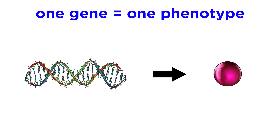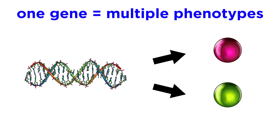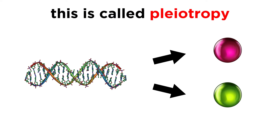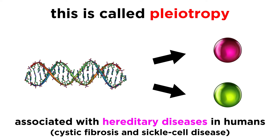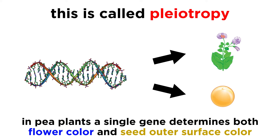Now let's step things up a notch. Until now, even in situations with multiple alleles, we have only seen cases where a particular gene influences only one phenotypic character. Oftentimes, however, a single gene can have multiple phenotypic effects. This is a situation called pleiotropy. In humans, pleiotropic alleles produce multiple symptoms associated with hereditary diseases like cystic fibrosis and sickle cell disease, whereas with pea plants, a single gene determines both flower color as well as the color of the outer surface of the seed.